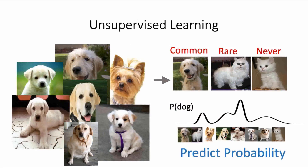In unsupervised learning, we have a training data set that does not have labels, so the model's goal is not to learn labels, but instead its goal is to learn patterns in this unlabeled data set. When learning about a specific category, the unsupervised learning model would learn how likely different patterns are to appear within this category, and also learn about the structure within these patterns.